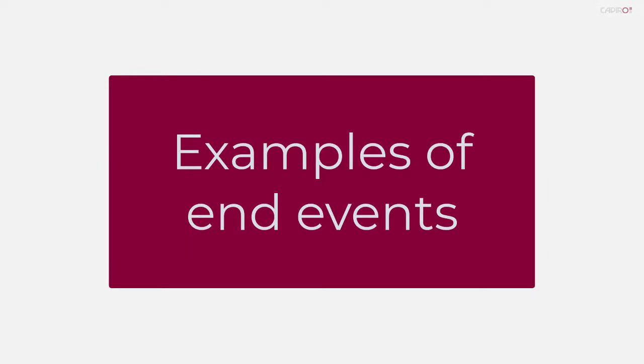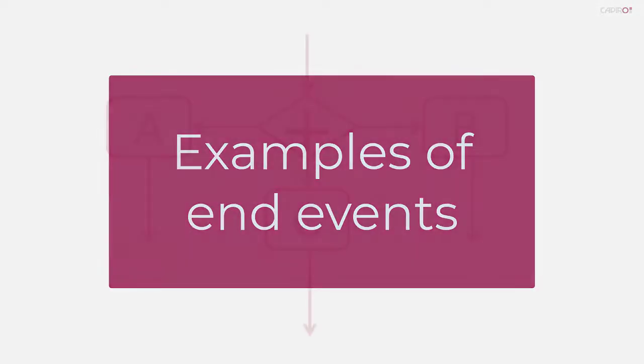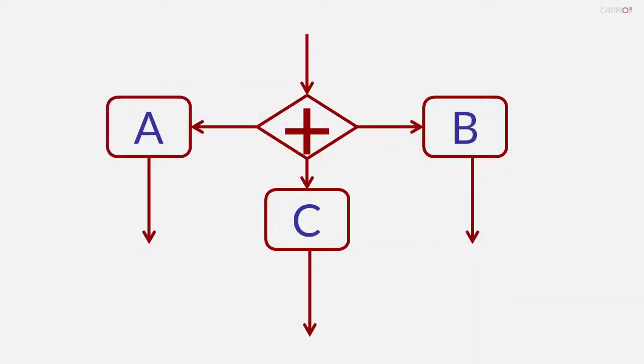Let's look at a few examples of how end events can be used. To set up the examples, we have a fragment of a process with three activities, A, B and C, operating at the same time, concurrently or in parallel.